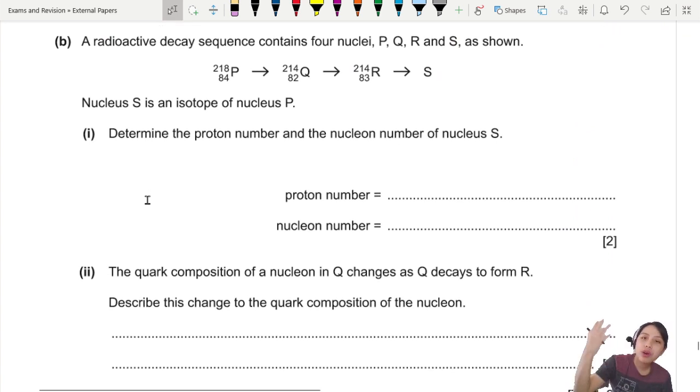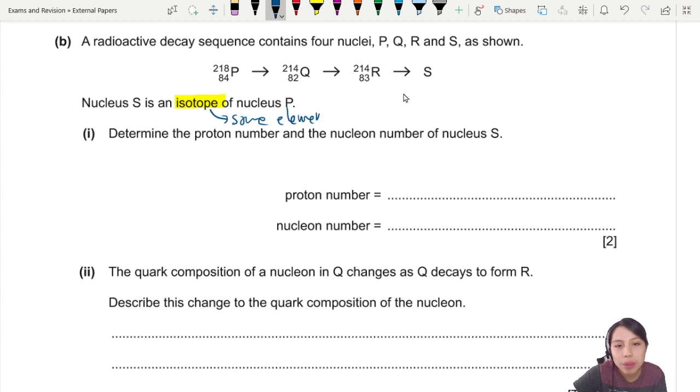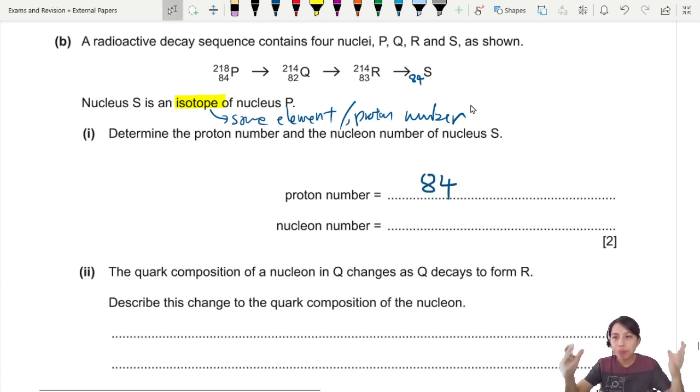A radioactive decay sequence has four nuclei, P, Q, R, and S. This one decays to this one, decays to this one, decays to this one. Nucleus S is an isotope of nucleus P. That's an important clue. Isotope means they are the same element. Same element means they have the same proton number. That's a big clue. So this one should be 84 and something else.